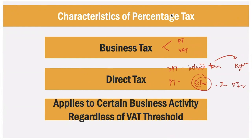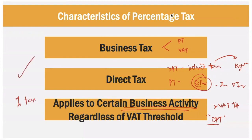Some businesses top up their prices so that they get the net price they want — they factor in the percentage tax ahead of time. Another characteristic is that percentage tax applies to certain business activities regardless of the VAT threshold. You do not need to determine your VAT threshold; if the activity falls under OPT, we still subject it to percentage tax, with the exception of radio or TV franchise grantees.